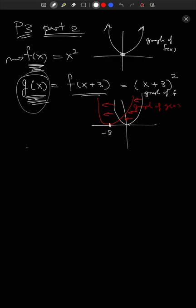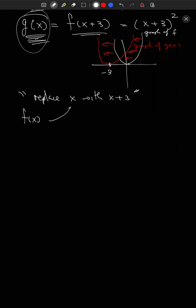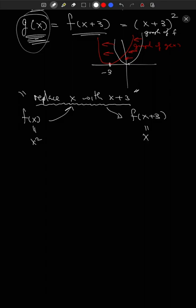We also talked about this kind of modification using the phrase 'replace x with x+3.' What we mean is: if we start with f(x) and follow those instructions, every time we see an x, we replace it with x+3. So if f(x) were x², then f(x+3) would be (x+3)². This phrase describes how we got from f(x) to g(x).